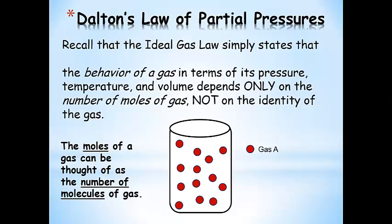The ideal gas law says that the behavior of a gas in terms of its pressure, temperature, and volume depends only on the number of moles of gas, not on the identity of the gas. The gas molecules don't interact with each other, so they don't care what gas is in there or about the other gas molecules. So pressure, temperature, and volume just depend on how much there is, but not what it is.